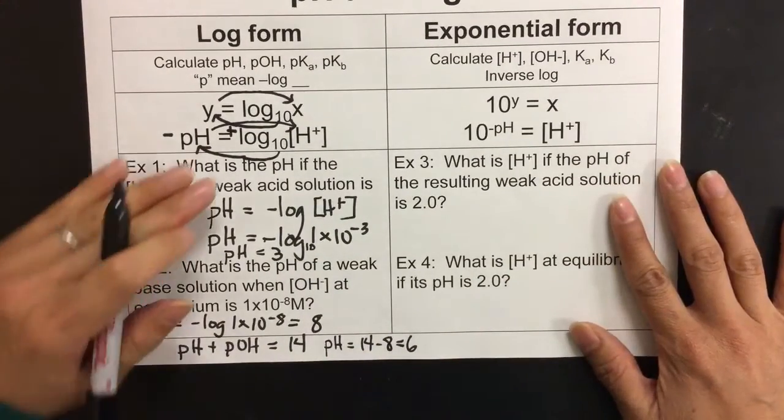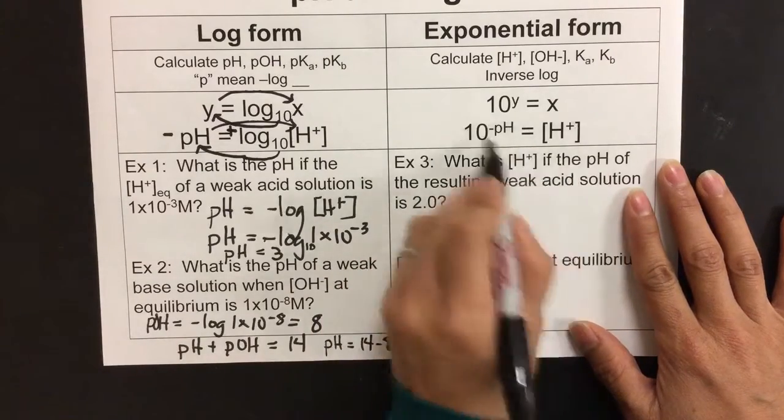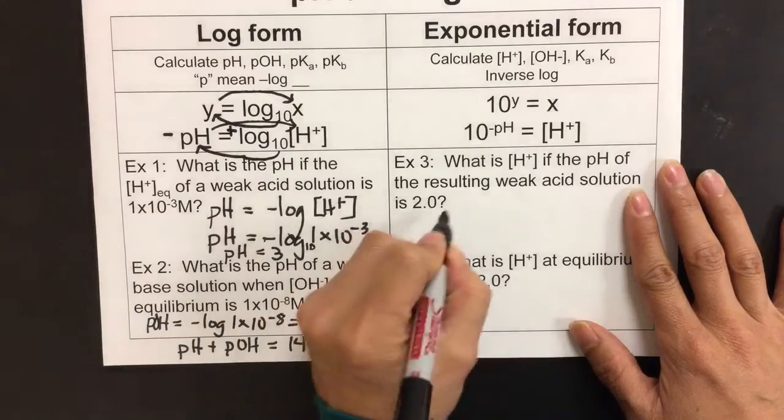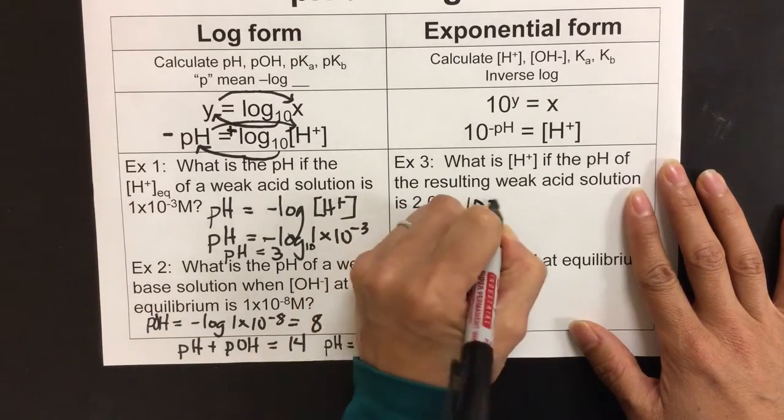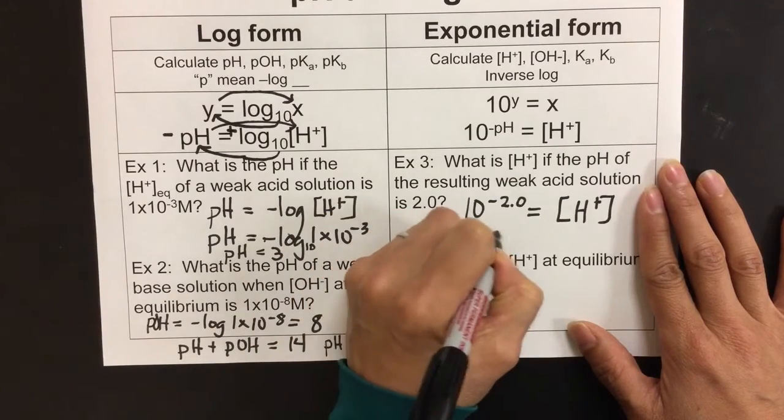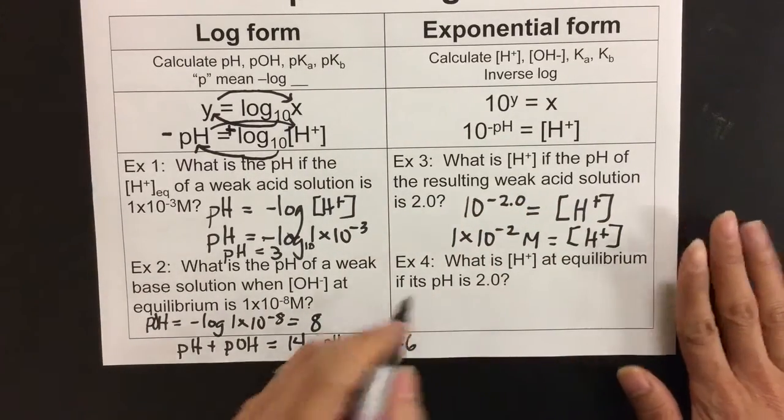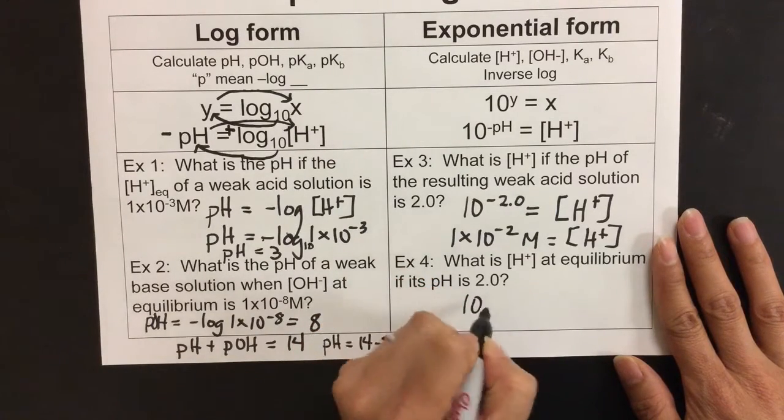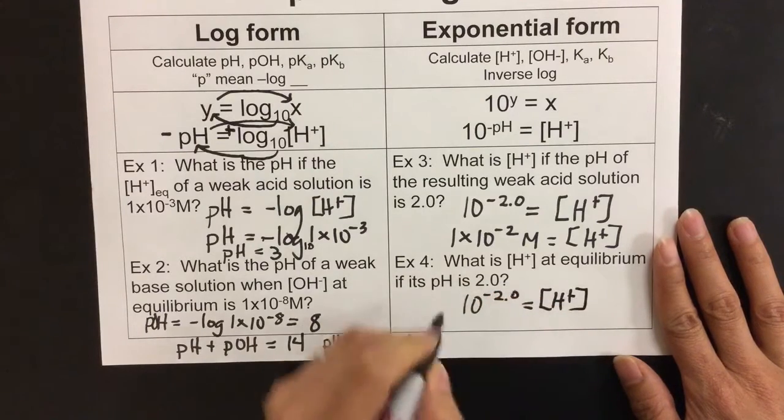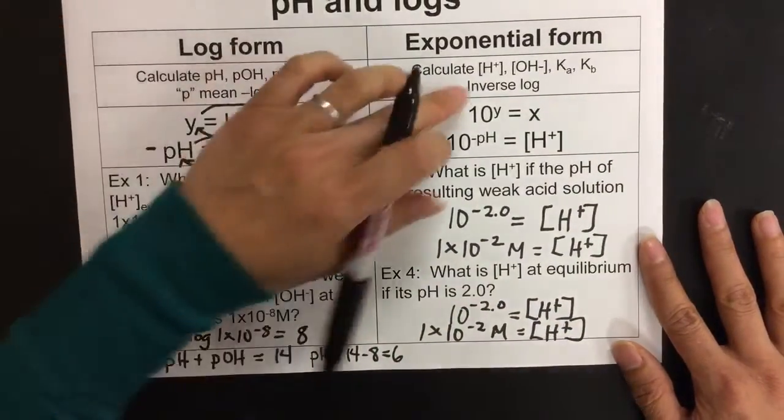Here we have the reverse. These problems you're looking for pH, now you're given the pH and you're finding the H+ concentration. Once again, we're looking at this inverse log, which is 10 to the negative pH equals H+ concentration. Here I have 10 to the negative 2.0, because that's my pH, equals my H+ concentration. In the end, this is like saying 1×10⁻², molarity concentration of H+. This is how to interchange between log and exponential form.